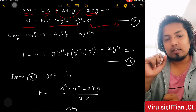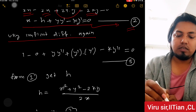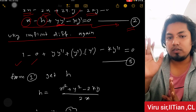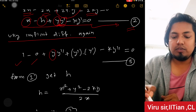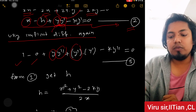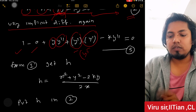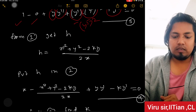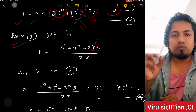Differentiating equation 2 again implicitly: 1 - 0 (h is constant) + applying the product rule to y·y' gives (y')² + y·y'' + k·y'' = 0. Wait — differentiating 2y·y' using the product rule: first function y times derivative of y' which is y'', plus second function y' times derivative of y which is y'. So we get (y')² + y·y'' - k·y'' = 0. This is equation 3.